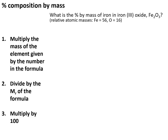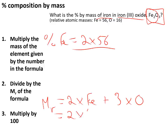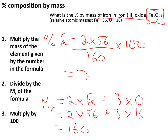To calculate the percentage composition by mass of an element in a compound — for example the percentage of iron in iron oxide — divide the total mass of that element by the relative formula mass of the compound, then multiply by 100. The MR of iron oxide (Fe2O3) is (2×56) + (3×16) = 160. So the percentage of iron is (2×56) / 160 × 100 = 70%.